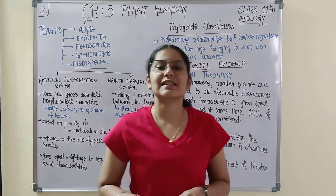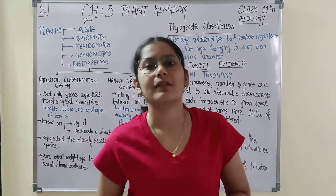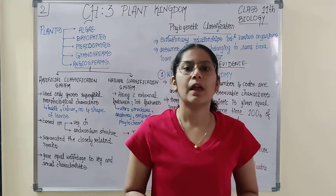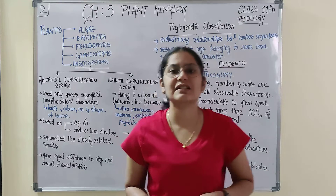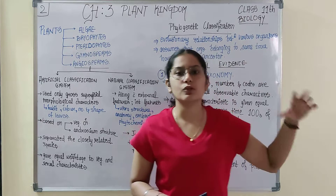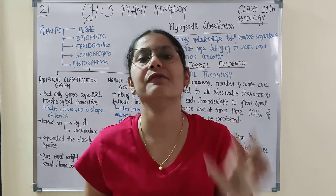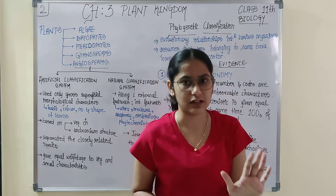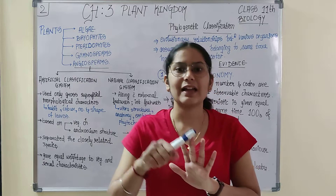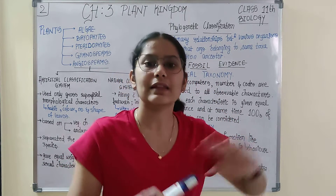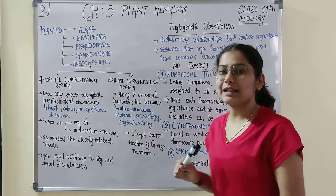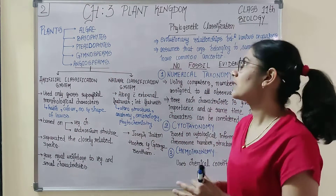Hello students, this is the second video lecture of Class 11 Biology Chapter 3, Plant Kingdom. In the previous video lecture, we looked at how Whittaker in 1969 gave a five-kingdom classification. The five kingdoms were Monera, Protista, Fungi, Plantae, and Animalia. In this chapter, we are focusing on the kingdom Plantae, which we would be discussing as plant kingdom.